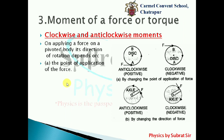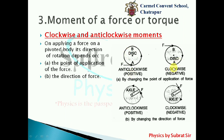When applying a force on a pivoted body, its direction of rotation depends on two things: the point of application of the force, and the direction of the force. For example, on a disk, when a force F is applied on side A, it rotates in the anticlockwise direction (positive). When force is applied tangentially at point B, the body rotates in the clockwise direction (negative).